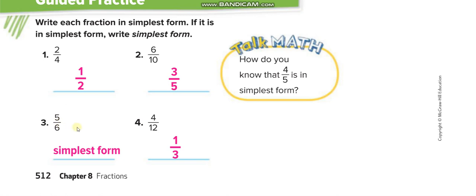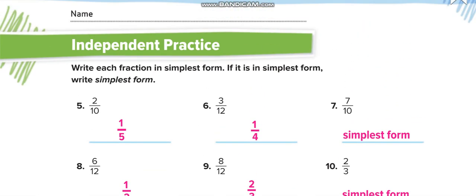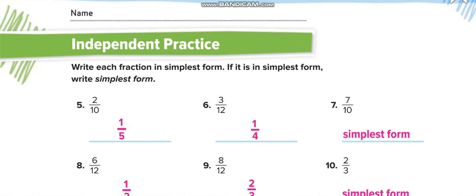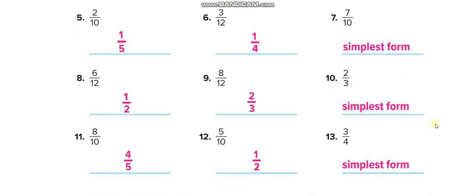For 4 over 12: divide by 4 up and 4 down — 4 divided by 4 is 1, 12 divided by 4 is 3. For 4 over 5: you cannot divide the same number up and down, so it's already in simplest form. In the independent practice, solve all these questions by yourself first and then match your answers from this video.